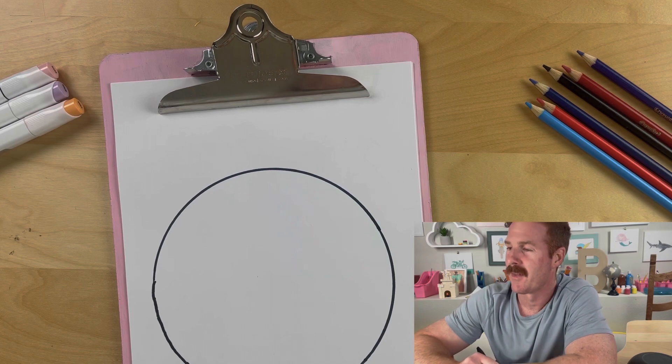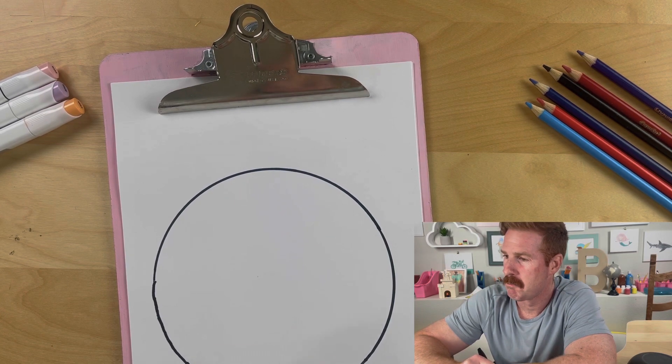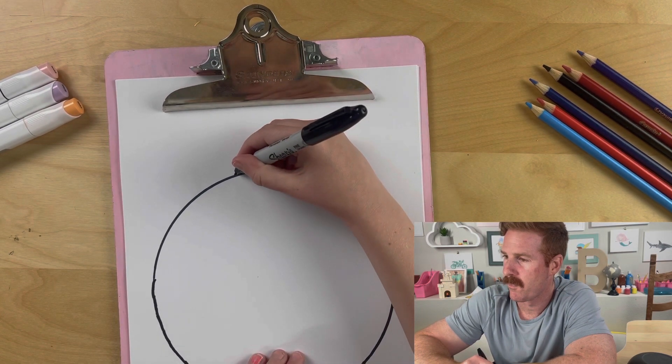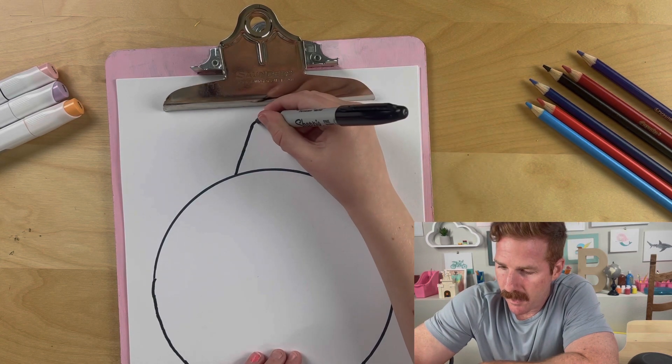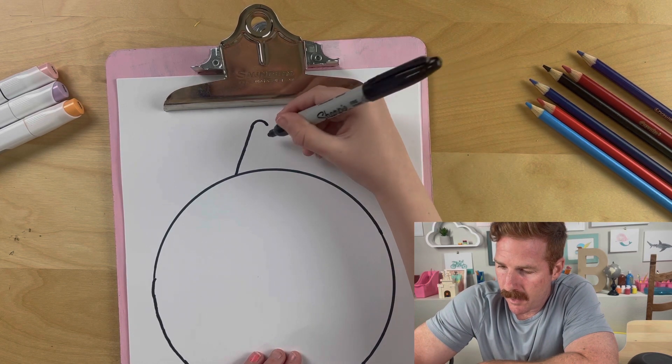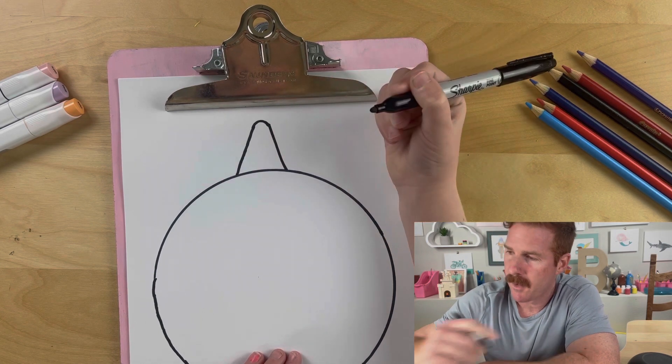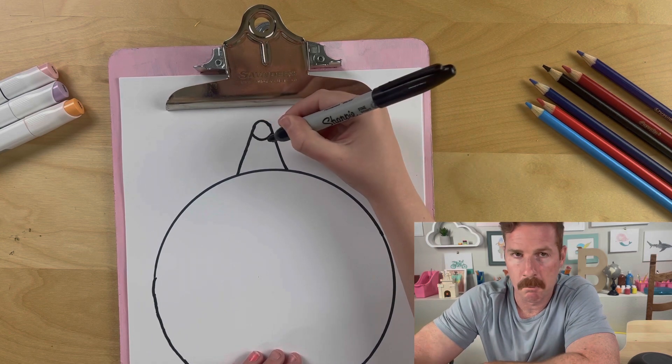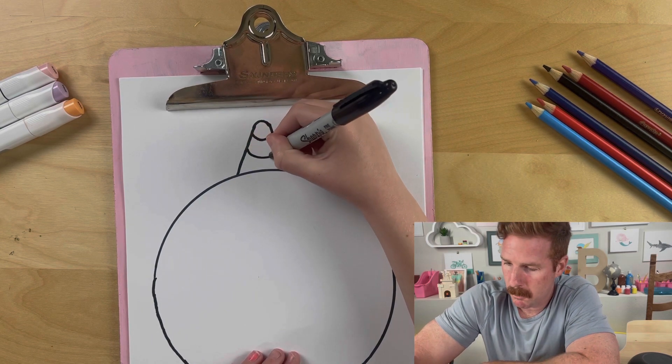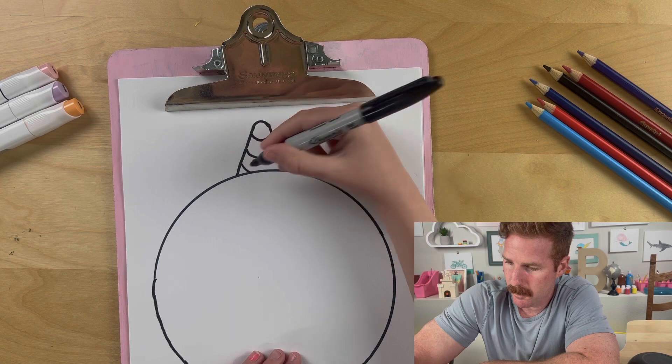Next, we're gonna draw the unicorn horn. So you're gonna draw up, a little bump, and down. And then you can do three lines. One, two, and three.